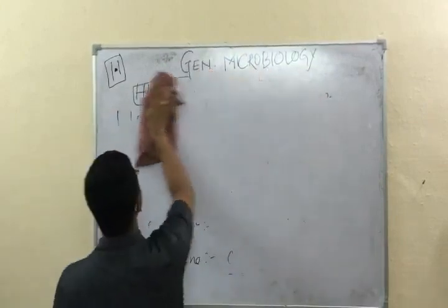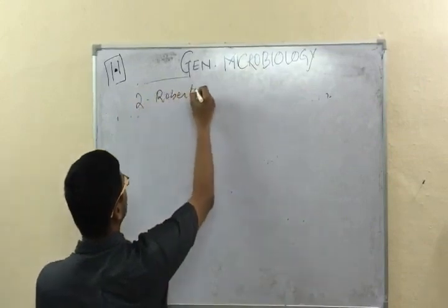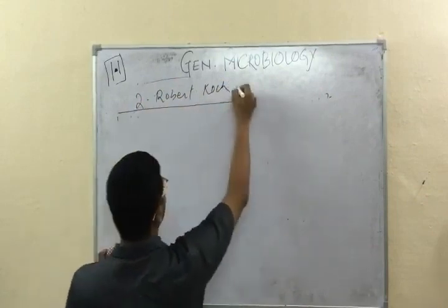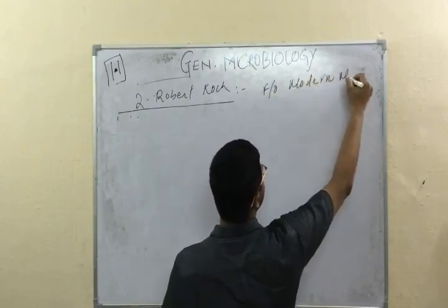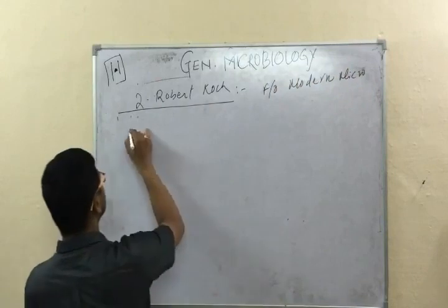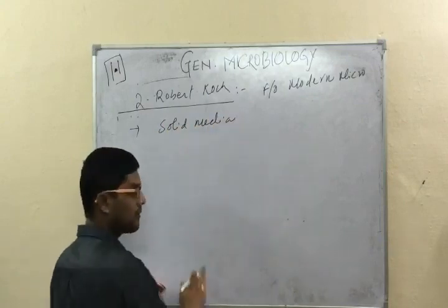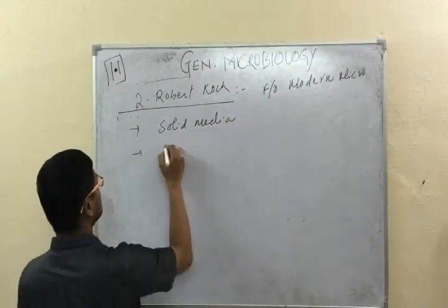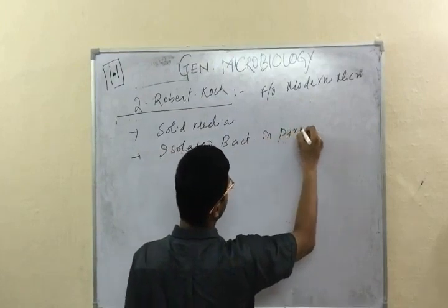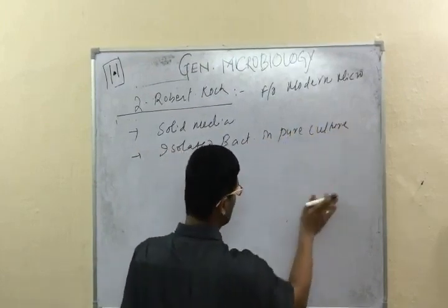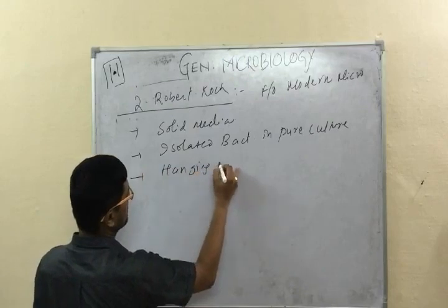The second eminent microbiologist is Robert Koch. He is very popular in the field of microbiology. Robert Koch is known as the father of modern microbiology. He laid down various principles: he used solid media for bacterial culture, and he was the first to isolate bacteria in pure culture.